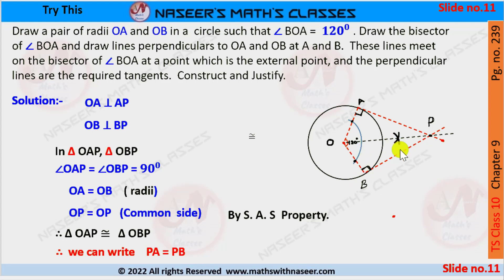We get two triangles from the construction: triangle OAP and triangle OBP. In these triangles, angle OAP equals 90 degrees, angle OBP equals 90 degrees, radii OA equals radii OB, and OP is the common side.